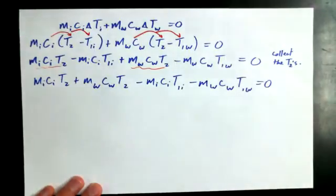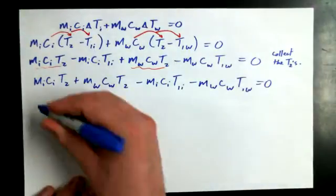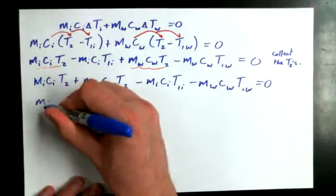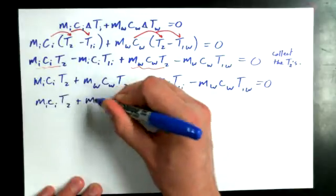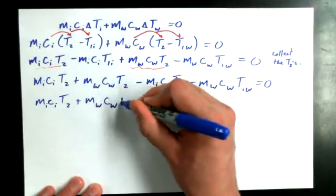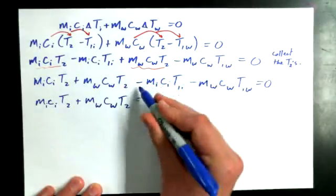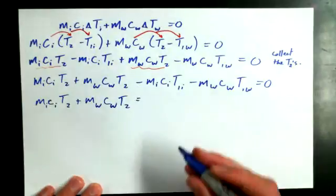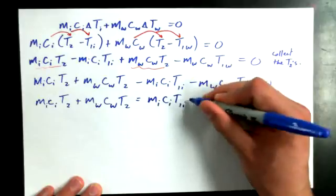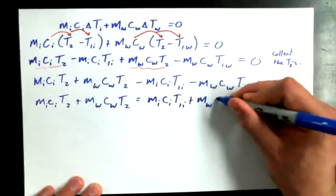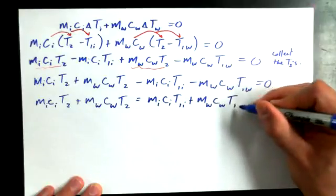And now, I want to take the T1's over to the other side. And you end up getting, oh my goodness, this is getting huge. M-I-C-I-T2 plus M-W-C-W-T2 is equal to, when it goes over to the other side, becomes positive, M-I-C-I-T1-I plus M-W-C-W-T1-W.